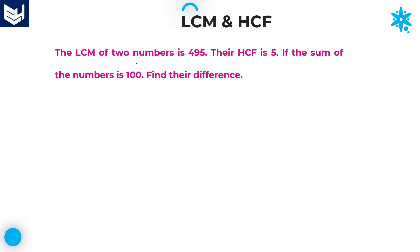Let's move to the next question. The LCM of two numbers is 495 and their HCF is 5. If the sum of the numbers is 100, find their difference.